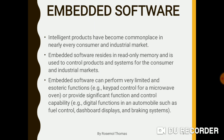The first type is embedded software. Intelligent products have become commonplace in nearly every consumer and industrial market. Embedded software resides in read-only memory and is used to control products or systems for the consumer and industrial market. Such products that are intelligent or that help make work easier use certain types of software. The software resides in their memory and is normally used to control that particular product. Such software exists only for read-only purposes.